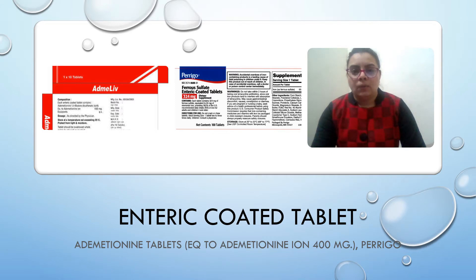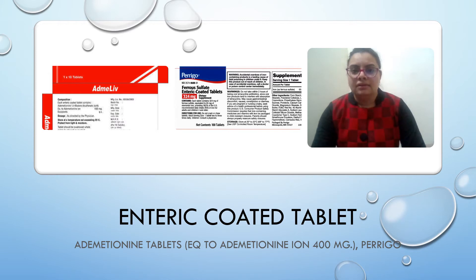If we talk about enteric coated tablets, they are coated in such a way that they release their content not in the stomach but in the intestine. One example is Perrigo, which contains ferrous sulfate — an enteric coated tablet used as a dietary supplement, with each tablet containing ferrous sulfate equivalent to 65mg elemental iron. The second example of an enteric coated tablet is Ademetionine, 400mg, with the brand name AdmeLive. These are the two examples of enteric coated tablets.